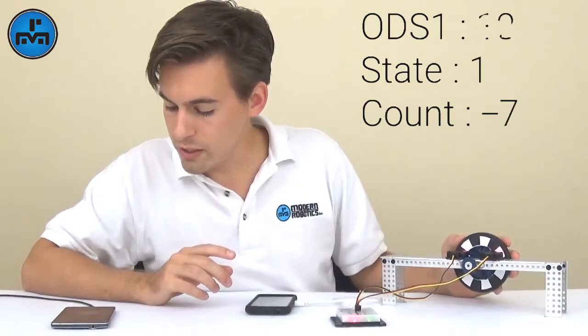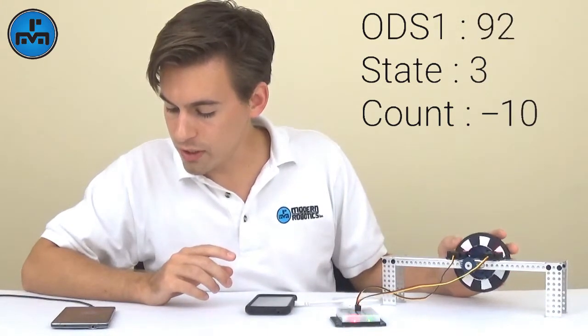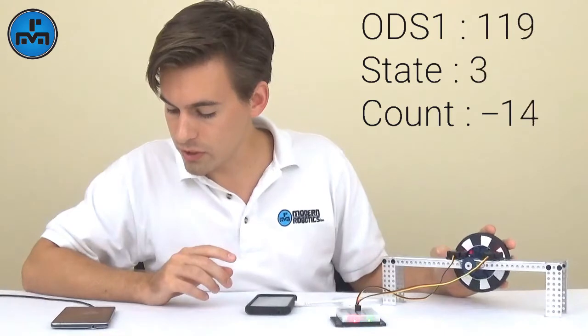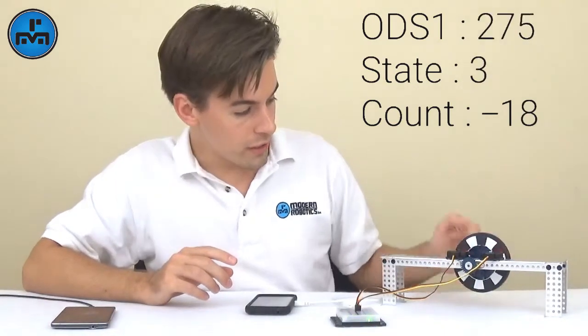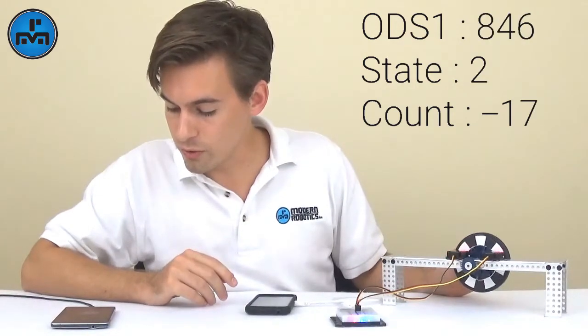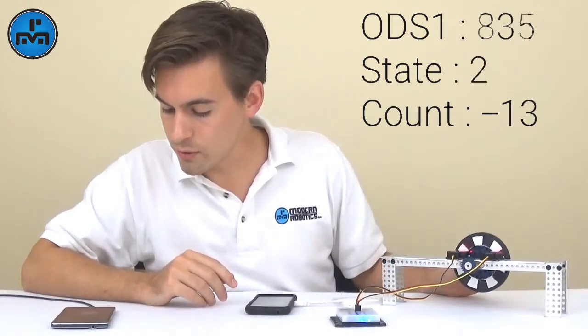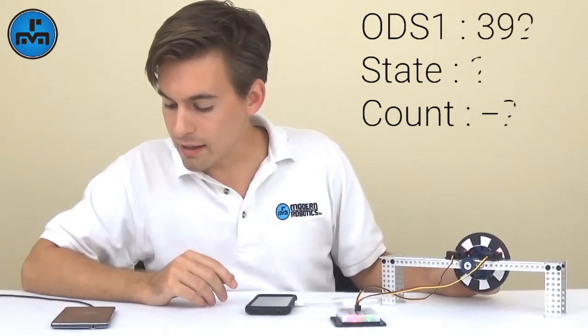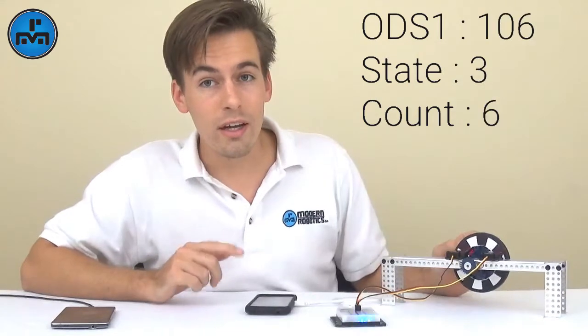So if I go from 3, 1, 0, 2, 3, 1, 0, 2, 3, 1, 0, 2, I'm turning in this direction. If I go the opposite direction, we're going to go from 3, 2, 1, 0, 1, 3, 2, 0, 1. And that sequence is going in the opposite direction when I spin the wheel in the opposite direction.